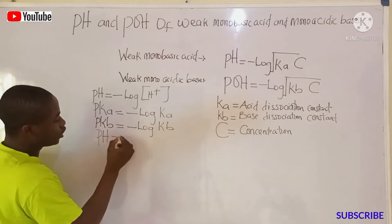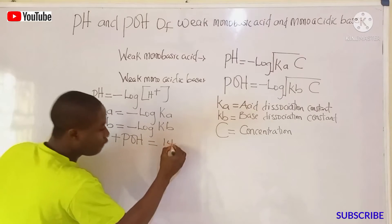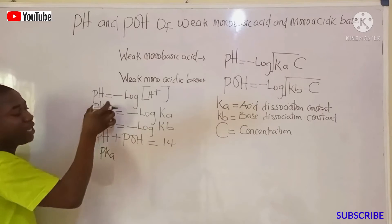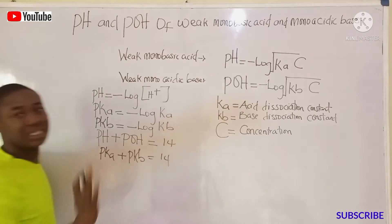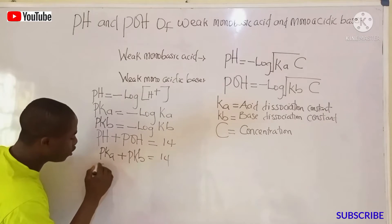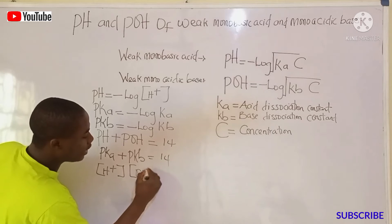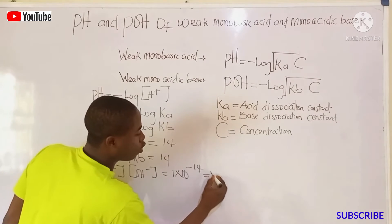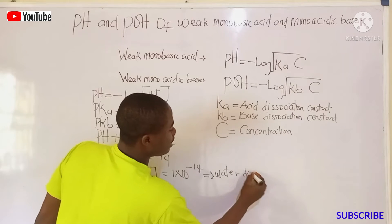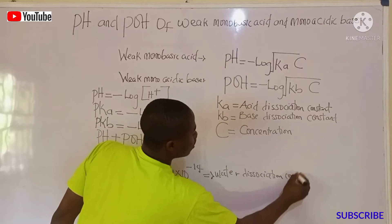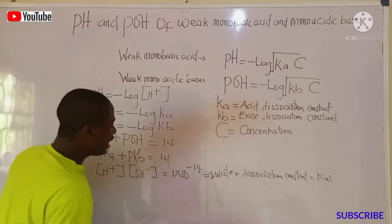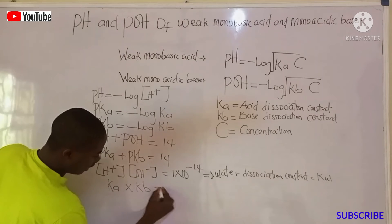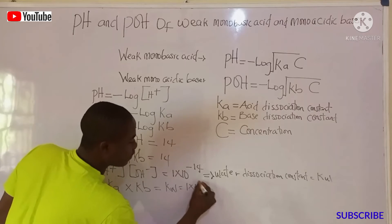We also have the equation: pH + pOH = 14. Similarly, pKa + pKb = 14. Another important equation is: [H⁺][OH⁻] = 1 × 10⁻¹⁴. This value is called the water dissociation constant, given the symbol Kw. From this, we also get: Ka × Kb = Kw = 1 × 10⁻¹⁴.